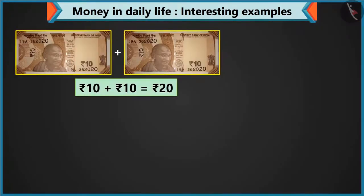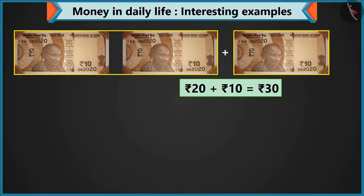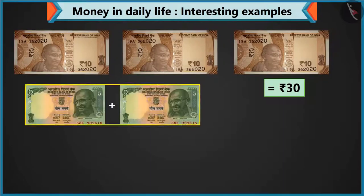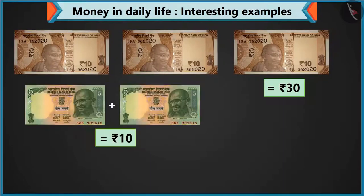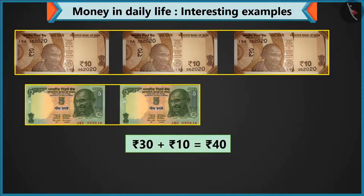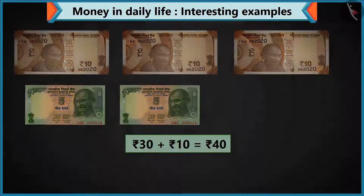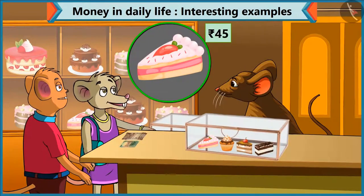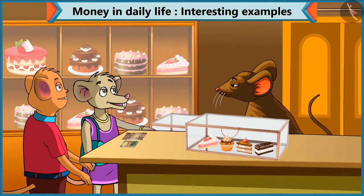Look, Chichi, adding 2 notes of 10 makes 20. Adding 10 to 20 makes 30. And 10 rupees by adding 2 notes of 5. Yes, 40 rupees on adding 30 and 10. But this pastry is worth 45 rupees.